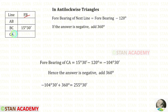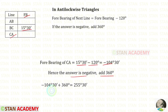Let us find the forebearing of CA: 15 degrees 30 minutes minus 120 degrees. We will get a negative value. We know that if the answer is negative, we have to add 360. When we do that, we will get 255 degrees 30 minutes.